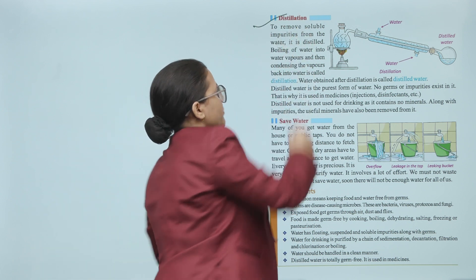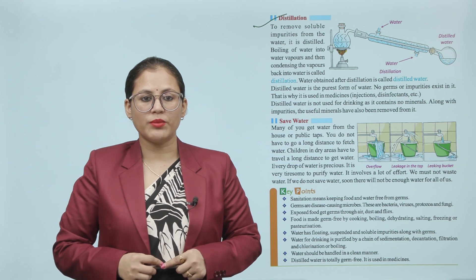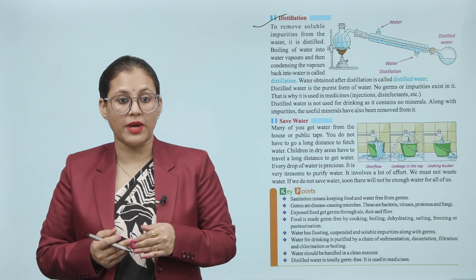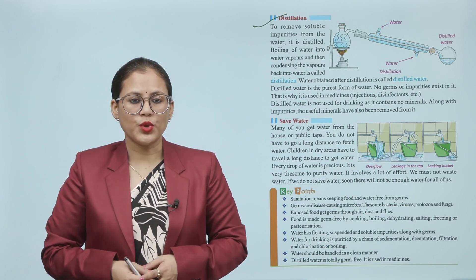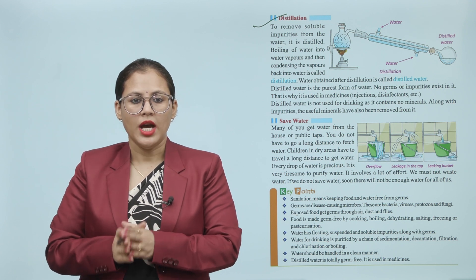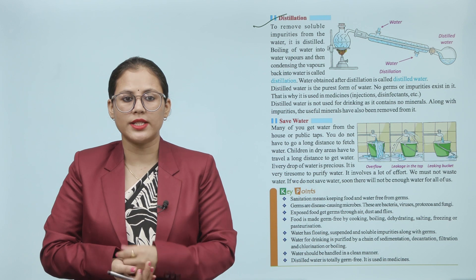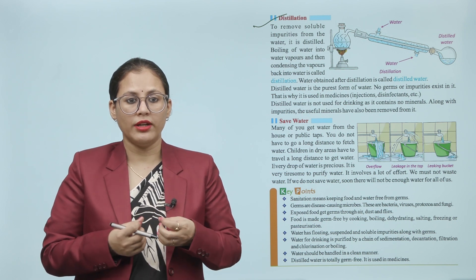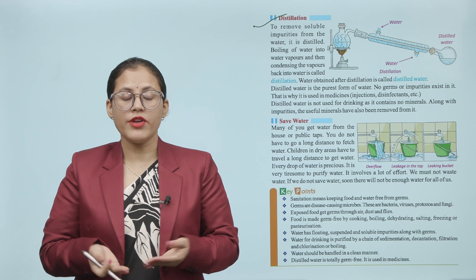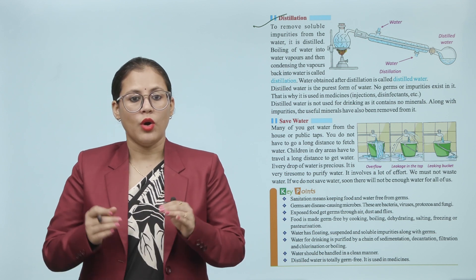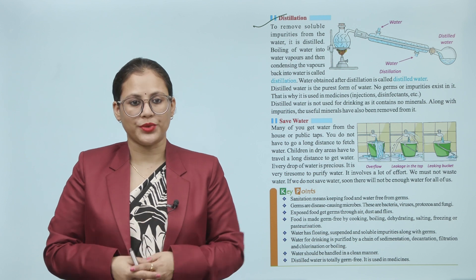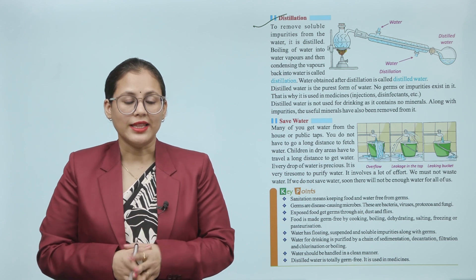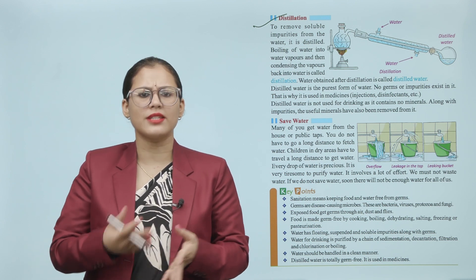Distillation. To remove soluble impurities from water, it is distilled. Boiling of water into water vapors and then condensing the vapors back into water is called distillation. Water obtained after distillation is called distilled water. If you have soluble impurities in the water, it is purified by distillation. The water is boiled into vapors, then condensed back into water. Distilled water is the purest form of water. No germs or impurities exist in it. That is why it is used in medicines like injections and disinfectants.